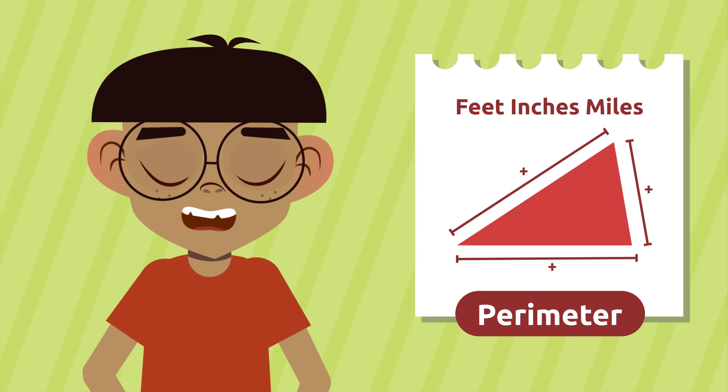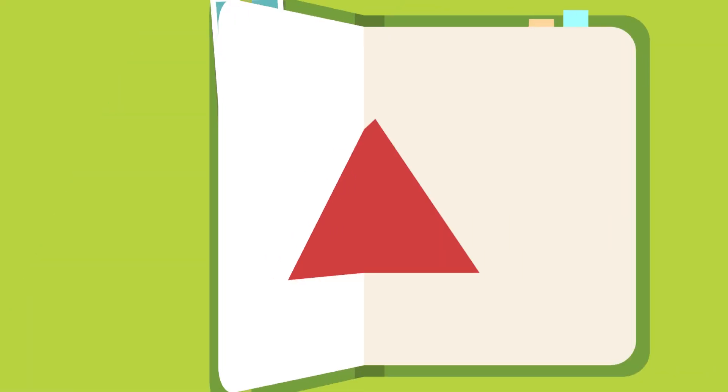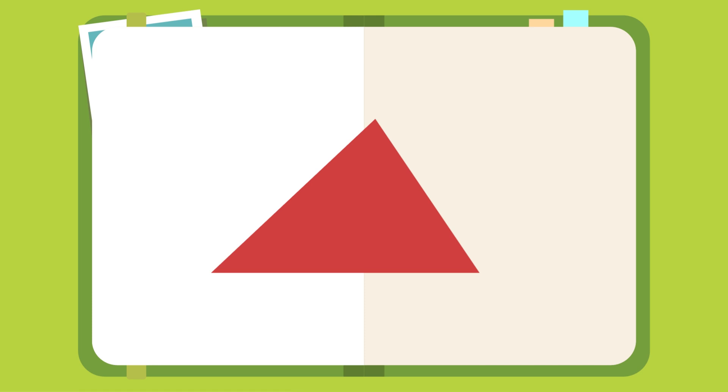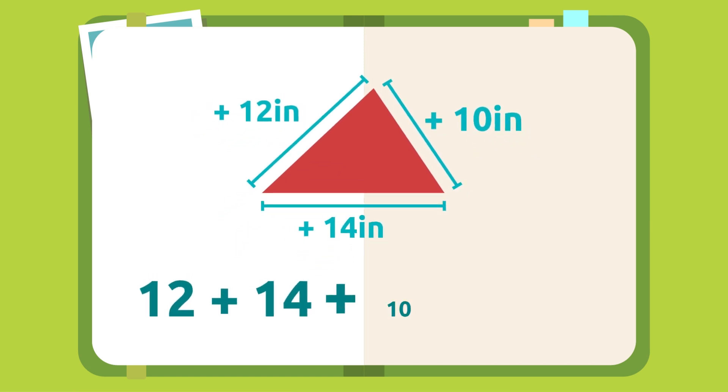Let's look at an example. This triangle has three sides that measure 12, 14, and 10. To find its perimeter, we should add 12 plus 14 plus 10, which equals 36 inches. Awesome! This triangle has a perimeter of 36 inches.